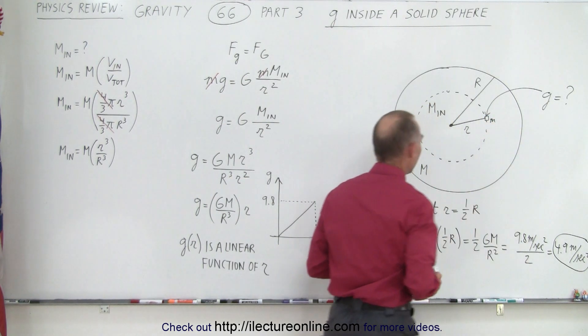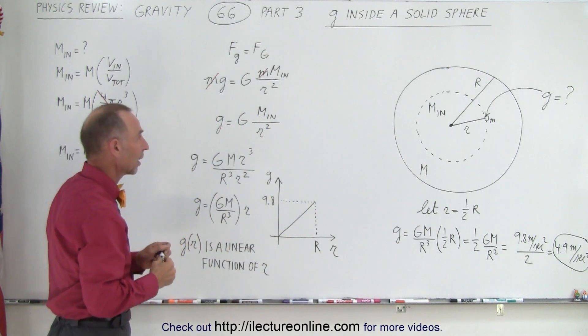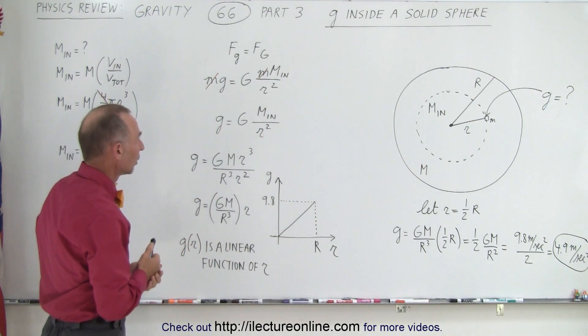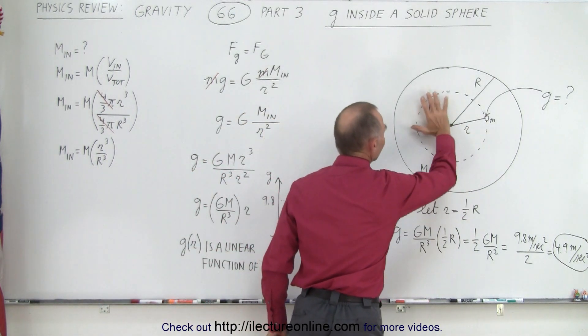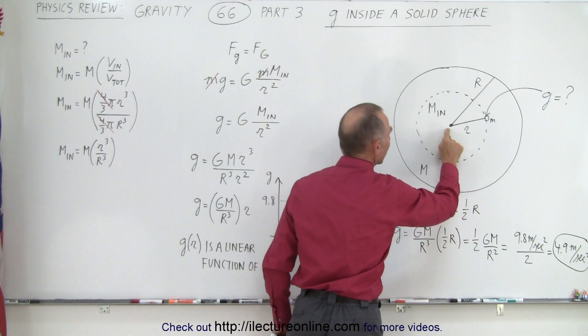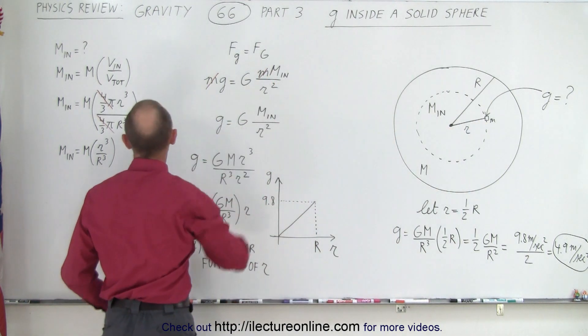And we want to know the force of gravity on that, or the acceleration of gravity on that small little object. Notice, in that case, we only consider the mass inside the sphere made by the radius little r. And how to find the mass inside that sphere?